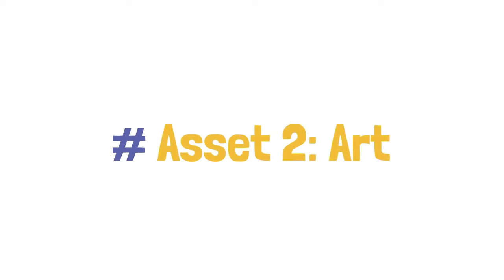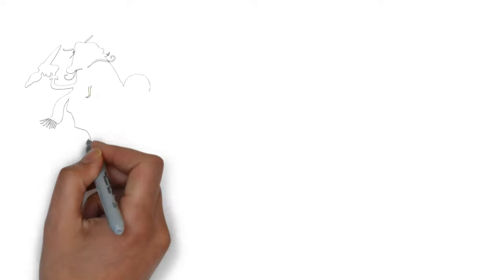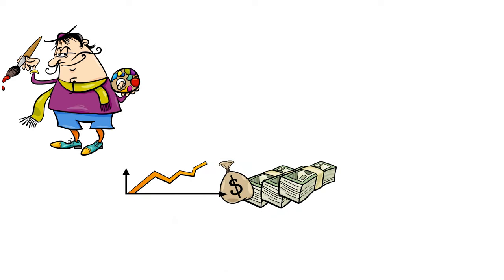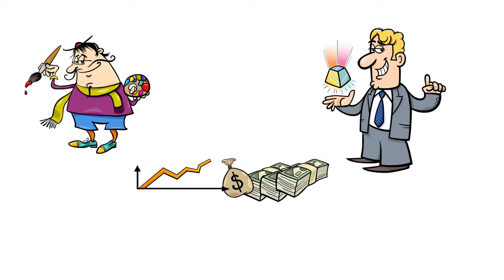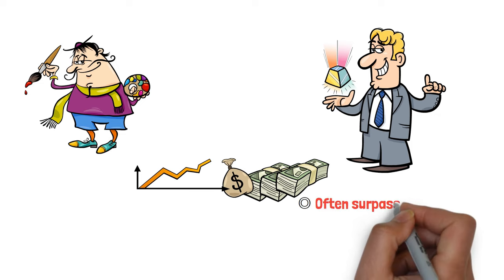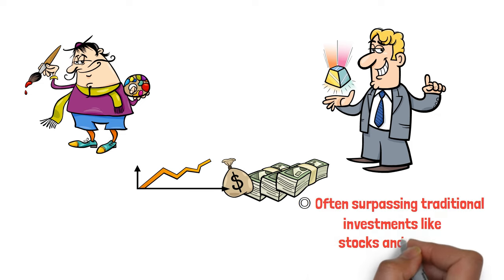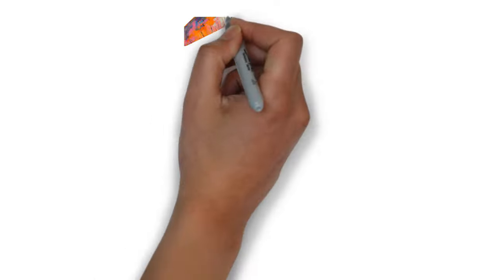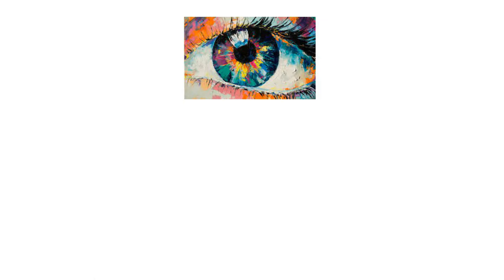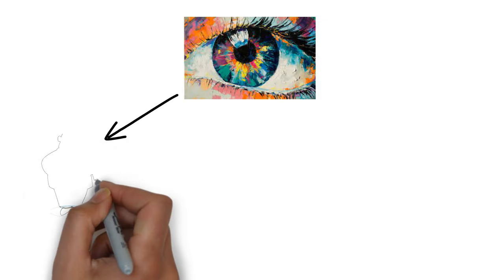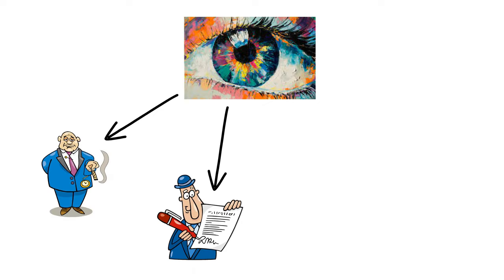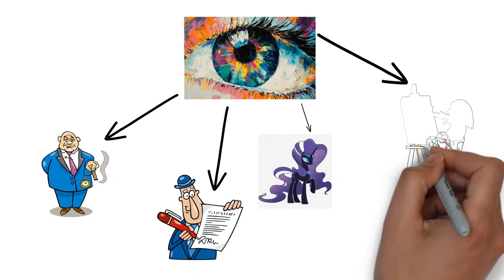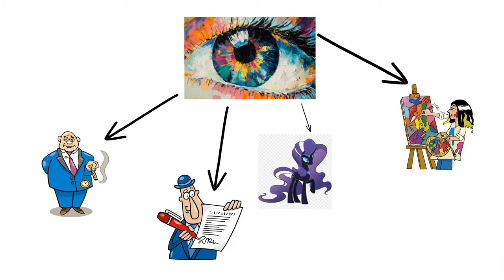Asset 2: Art. Beyond its aesthetic appeal, art holds a unique space in the investment world. A carefully chosen piece of art can offer impressive returns, often surpassing traditional investments like stocks and bonds. A piece of art's value is derived from various factors, such as the artist's reputation, historical significance, rarity, and current art market trends.